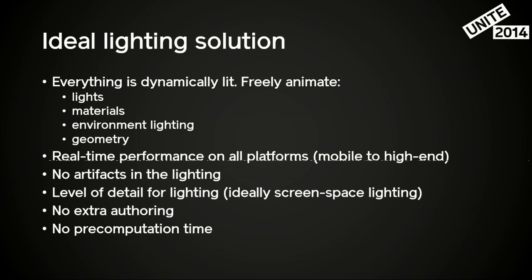We want clean lighting. We don't want to have unwanted artifacts. We want to be able to basically pre-process as much as we can, so that we know that the lighting is going to be good and help you get the best lighting without surprising artifacts. We also want the level of detail for lighting — we effectively want infinite detail, so that when you go closer, you get the lighting at that level of detail. We don't want to burden you with too much authoring, too many buttons to press. We just want this to happen automatically in the background, and we would ideally avoid any pre-computation time.